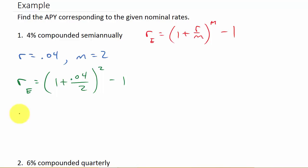And so that is going to give us R sub E is equal to 0.0404. And so that would be 4.04%. Remember, to convert it to a percentage, you just move the decimal two places to the right.